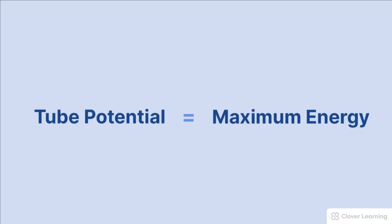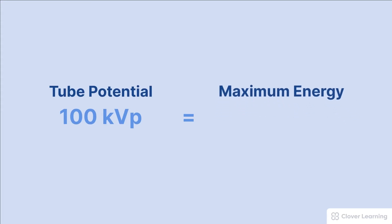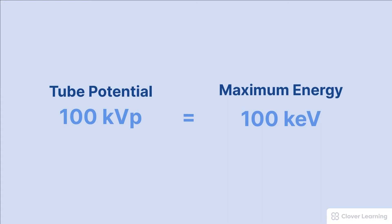The mathematical relationship between KVP and the x-ray beam energy is actually very simple. The KVP is mathematically equal to the maximum beam energy. So in this example, if the KVP is set to 100, the maximum energy photons in the beam are going to be 100 KEV. Not all photons in the beam will have 100 KEV, but some will. KEV is an acronym that stands for kilo electron volts, and that's just the unit of measure for quantifying the energy of x-ray photons.